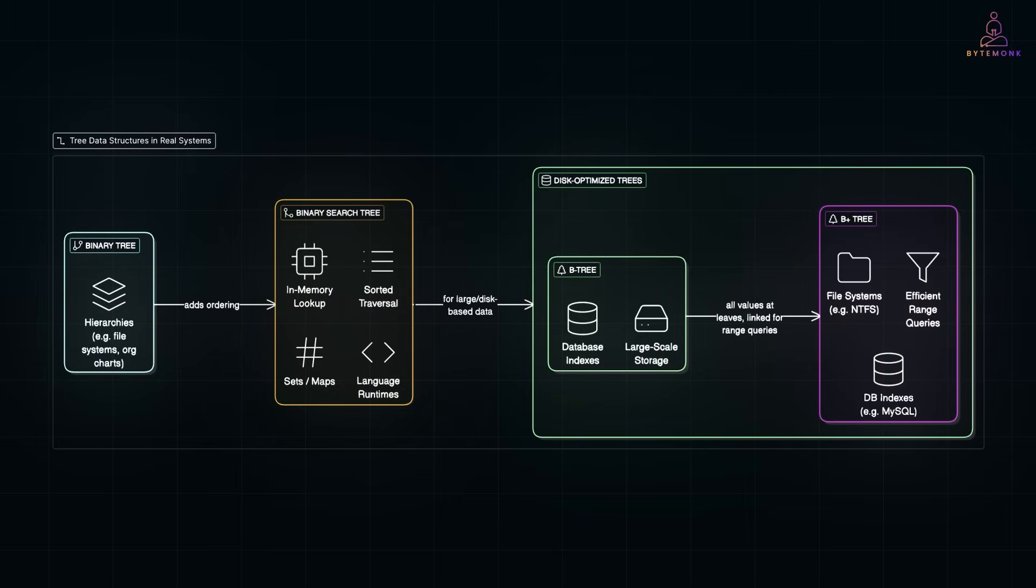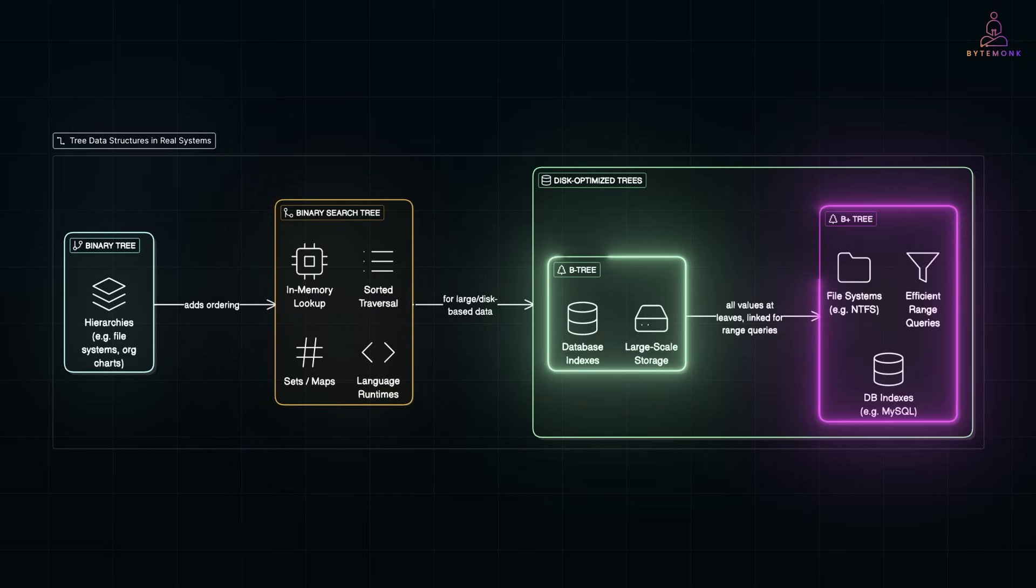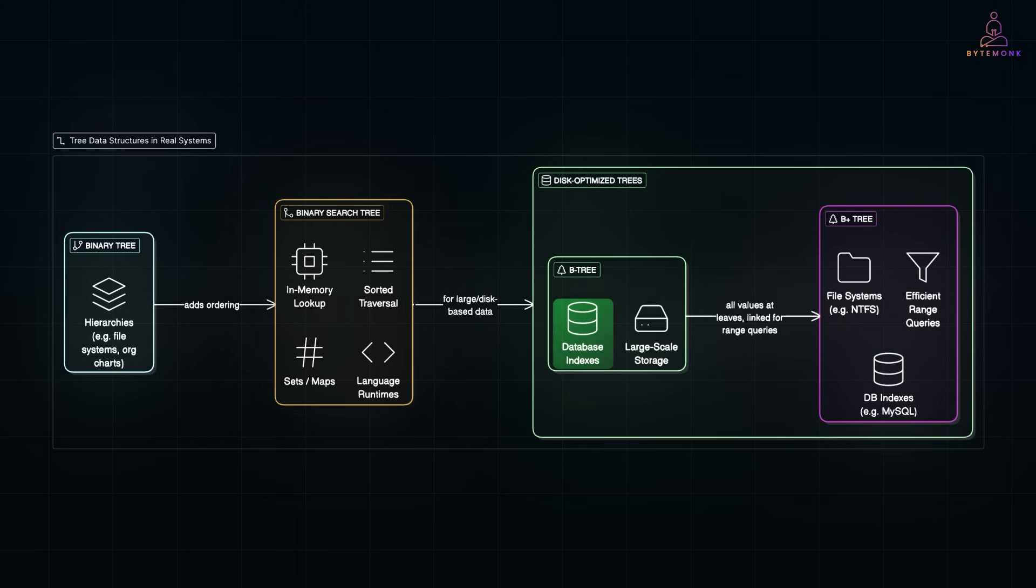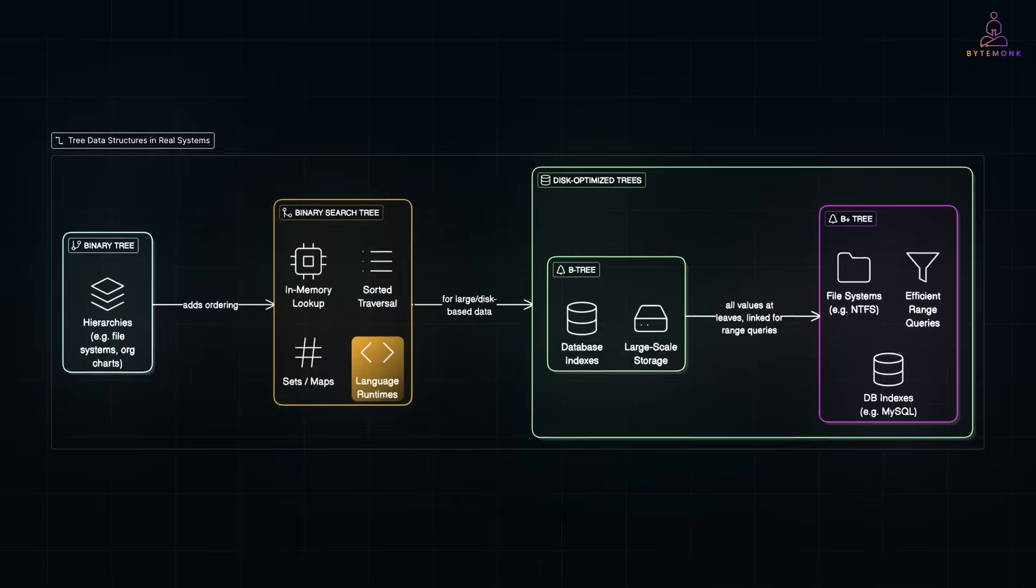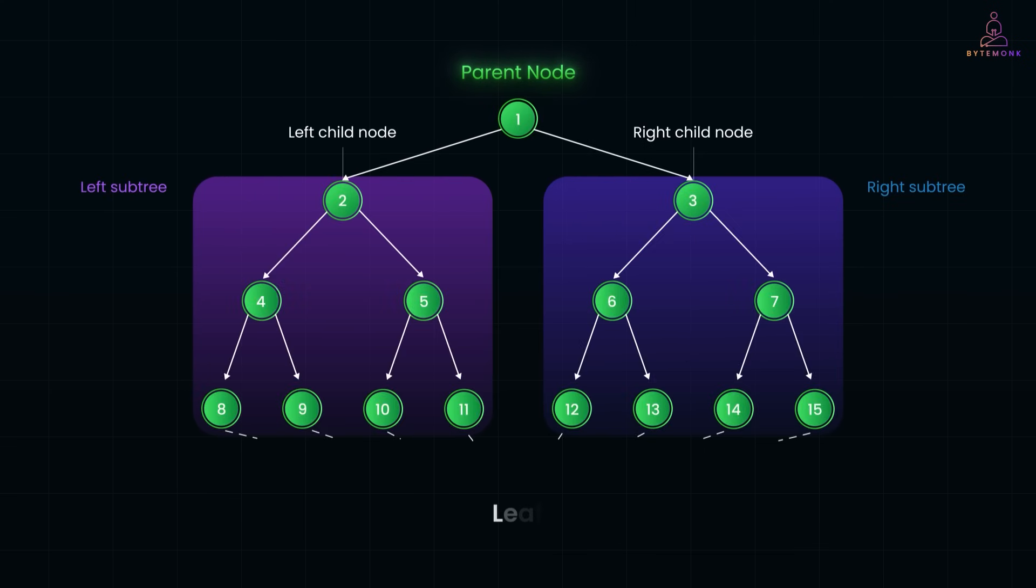In short, you use BSTs when data fits in memory and order matters, and use B-trees or B+ trees when working with large datasets on disk. These structures power real products from MySQL indexes to NTFS systems to language runtimes. Trees might seem abstract at first, but they model real-world computer problems elegantly and efficiently.